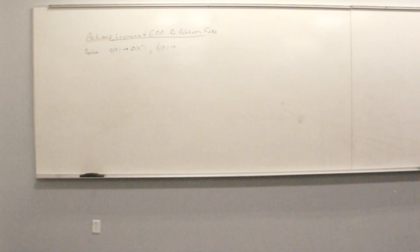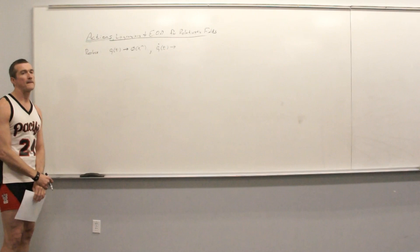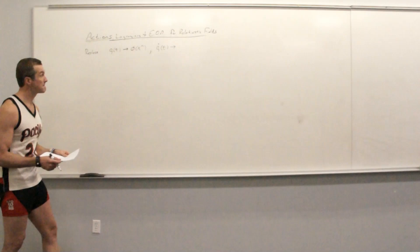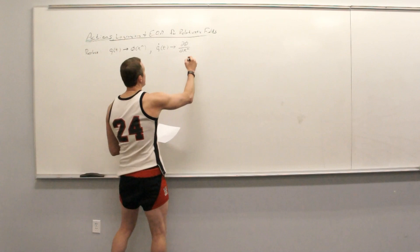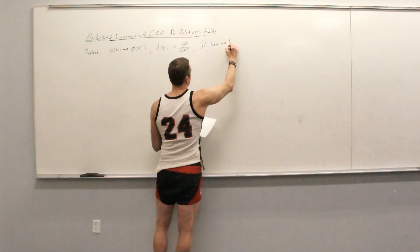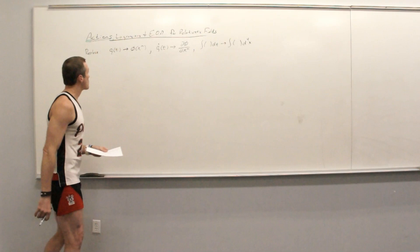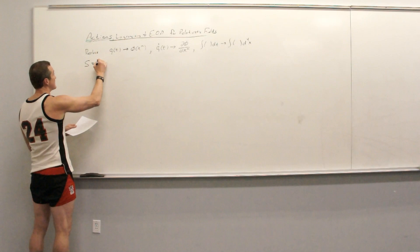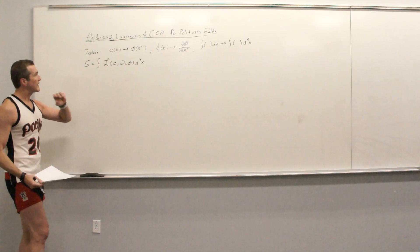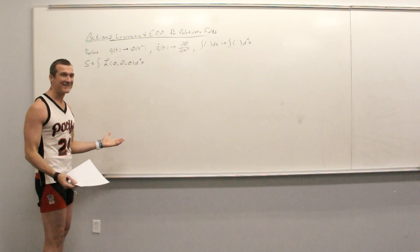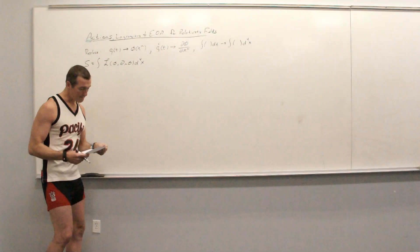q-dot gets replaced with partial phi over partial x-mu. And lastly, we replace our integral over dt with an integral over d⁴x. At the end of the day, our action is going to be the integral of the Lagrangian density over d⁴x, as a function of phi and its derivatives.